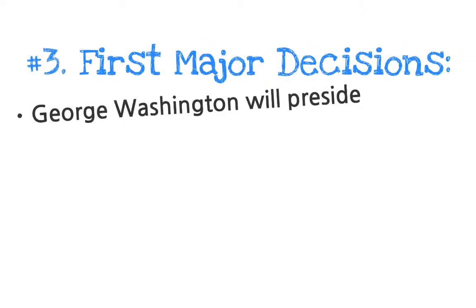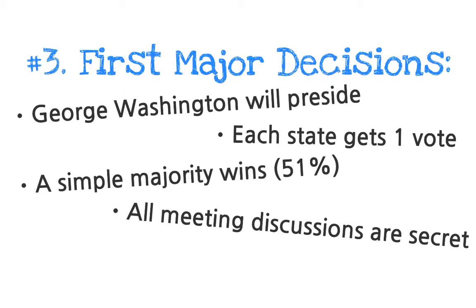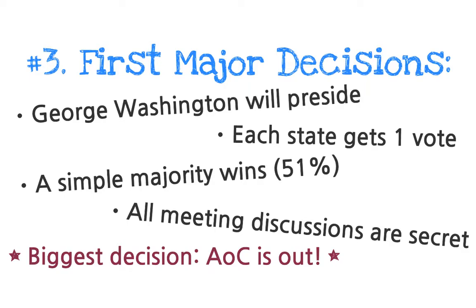Their first major decision was that George Washington would preside over the Constitutional Convention — meaning he's the one with the gavel. They decided each state would get one vote and that they needed a simple majority, which means out of 12 states there, seven had to vote yes for something. They also decided all discussions would be held secret, to ensure nobody would try to influence the Founding Fathers. The biggest decision they made pretty quickly was that the Articles of Confederation were out — they were going to get rid of them, which would almost be treason because they were overthrowing their current government.